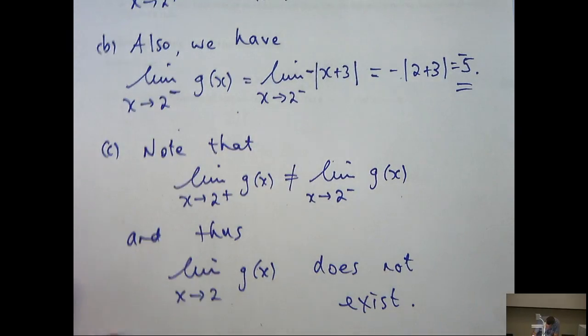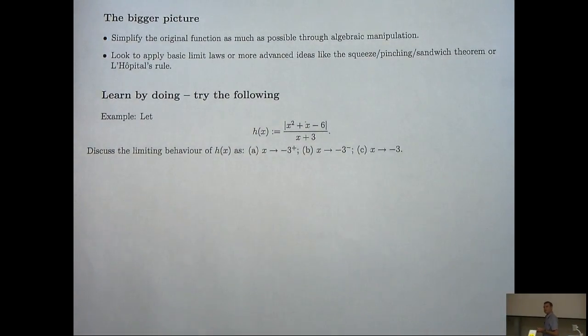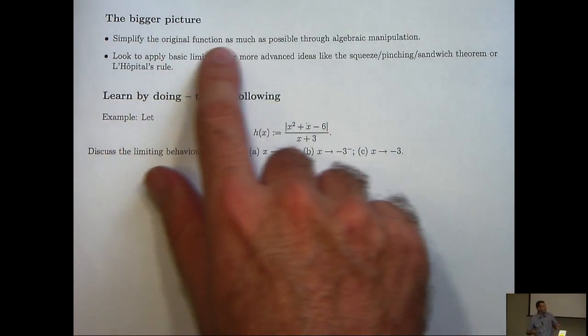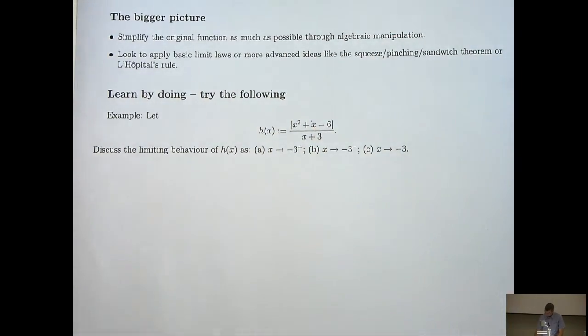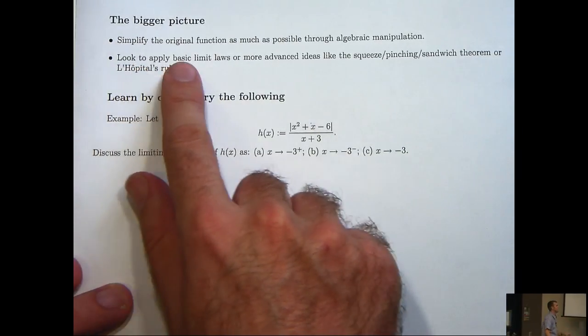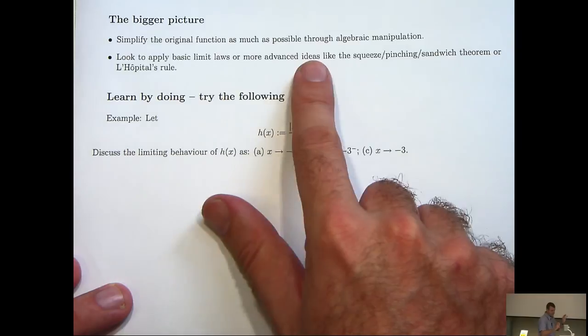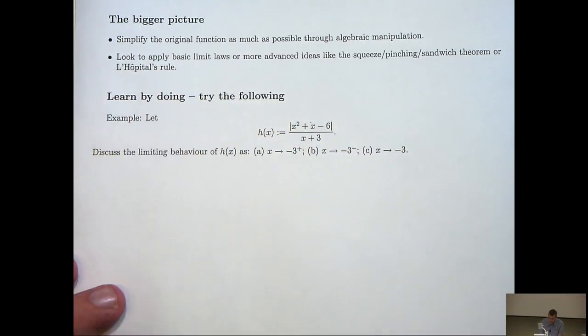Let's look at the bigger picture though. You can see in my solution, I simplified the original function as much as possible through algebraic manipulation. I tried to get rid of the absolute value signs or simplify them in some way and then look for some cancellation and factorization was a part of that too. I didn't use this second point, but this is just a general point about limits. Look to apply basic limit laws or more advanced ideas like the Pinching Theorem or L'Hopital's Rule.